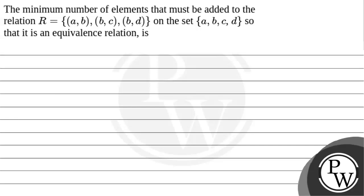Let's read this question. The question says that we need to find the minimum number of elements that must be added to the relation R = {(a,b), (b,c), (b,d)} on the set {a, b, c, d} so that it is an equivalence relation.